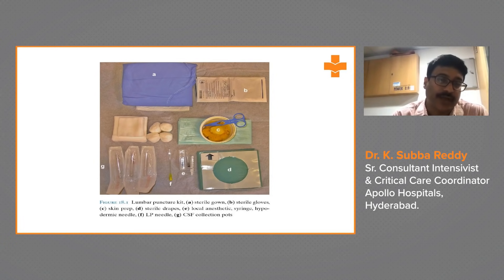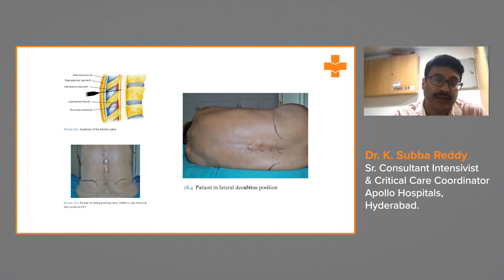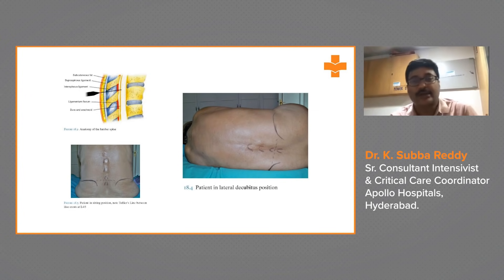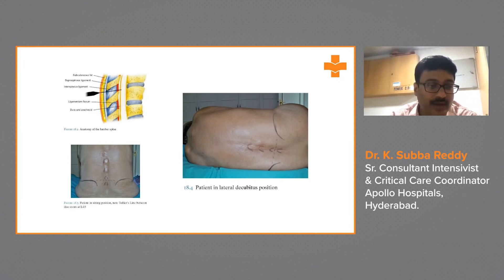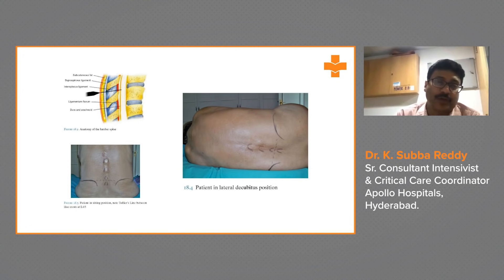The patient is positioned in the lateral decubitus position. You palpate the spinous processes to identify the interspinous space. It can also be done in a sitting position. You identify the L4-L5 space, then advance the lumbar puncture needle. When you feel a loss of resistance, slowly remove the trocar, and you will see the free flow of CSF.